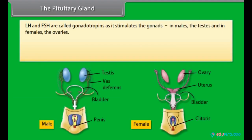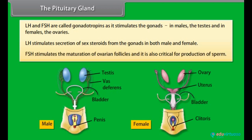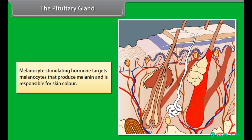LH and FSH are called gonadotropins as they stimulate the gonads — the testis in males and ovaries in females. LH stimulates secretion of sex steroids from the gonads in both male and female. FSH stimulates the maturation of ovarian follicles and is also critical for production of sperm. Melanocyte stimulating hormone targets melanocytes that produce melanin and is responsible for skin color.